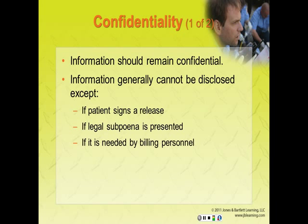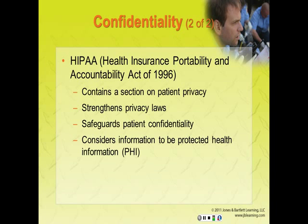The next section is confidentiality — probably the next biggest thing that can be litigated is violation of patient confidentiality. Information should always remain confidential between you and your patient. In most states, records may be released only if the patient signs a written release of records form, if you receive a legal subpoena, or if it is needed by billing personnel for continuity of care. Handing off patient information to ER staff is allowed because it provides continuity of care.